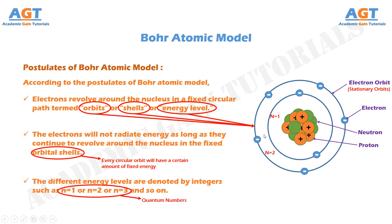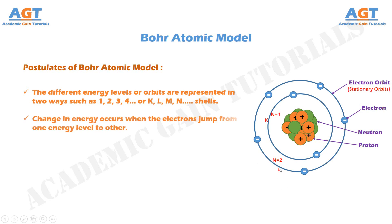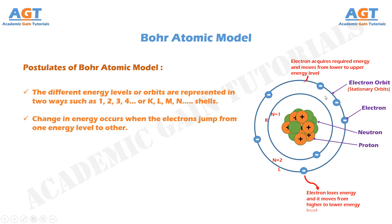The different energy levels or orbits are represented in two ways: as 1, 2, 3, 4 or as K, L, M, N shells. Change in energy occurs when the electrons jump from one energy level to another. An electron acquires required energy and moves from a lower to an upper energy level, as we can see here. An electron loses energy and moves from a higher to a lower energy level, as we can see here.